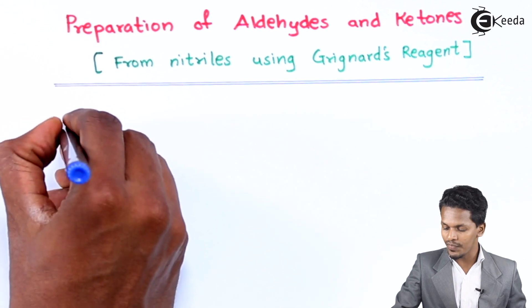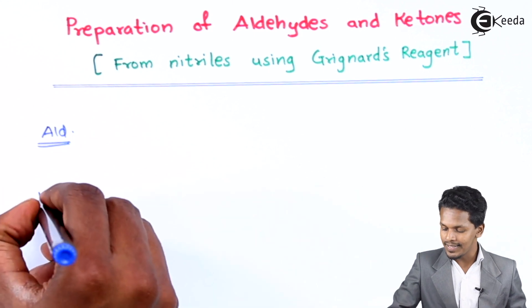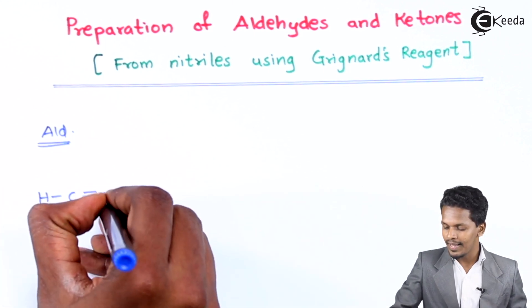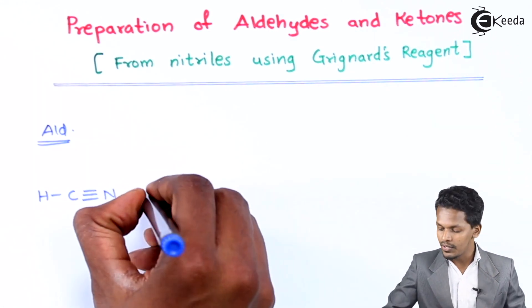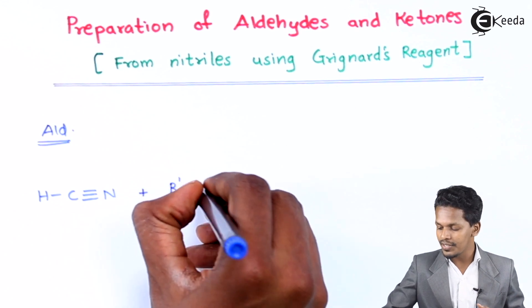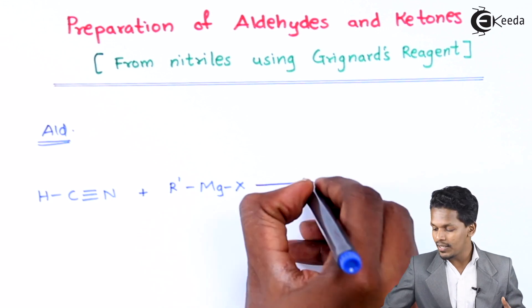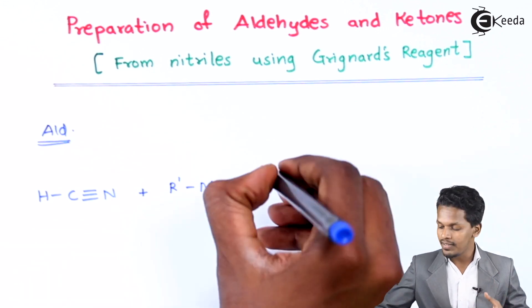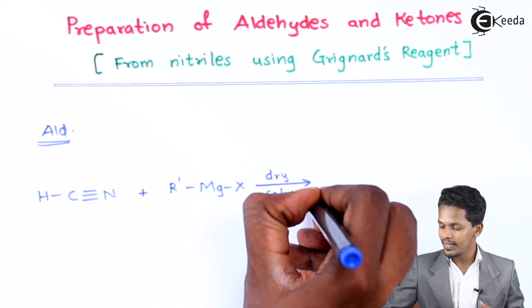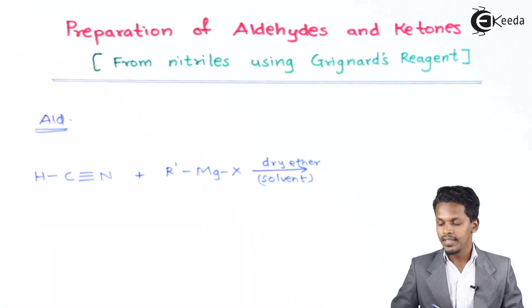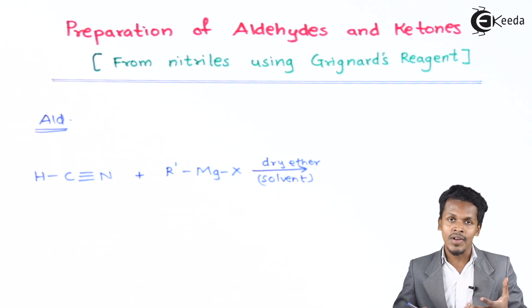Talking about the aldehyde that we have to prepare: for that we are using hydrogen cyanide, that is HCN. So whenever HCN is treated with a Grignard reagent — represented as R-MgX — this is the general reaction. The reaction proceeds in the presence of dry ether as solvent, and it forms an imine complex, also known as an adduct.